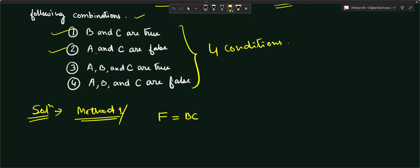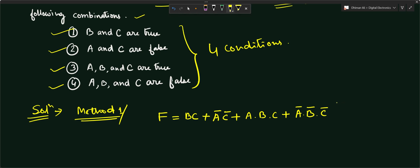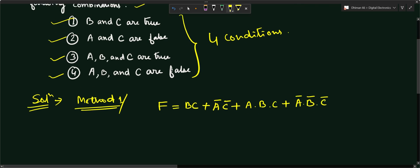For the first condition, B and C are true, so we write B·C. For the second condition, A and C are false, meaning A-bar and C-bar, joined with an OR. Third condition: A, B, and C are all true, giving A·B·C. Fourth condition: A, B, and C are all false, giving A-bar·B-bar·C-bar. The full expression is: F = BC + A̅C̅ + ABC + A̅B̅C̅.